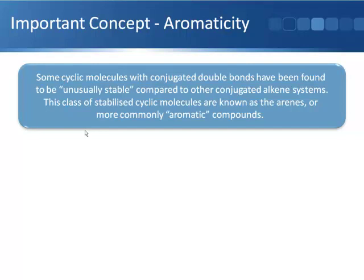Building on that, we went on to think about aromaticity. Some cyclic molecules that contain conjugated double bonds have been found to be unusually stable compared to other conjugated alkene systems. This class of stabilized cyclic molecules are known as the arenes, or more commonly aromatic compounds.